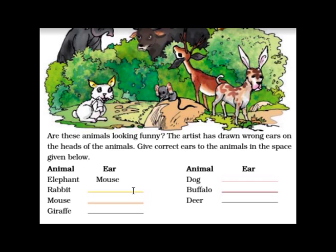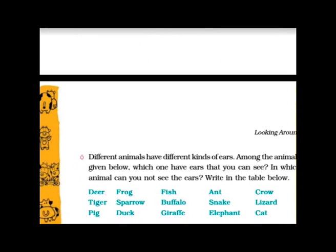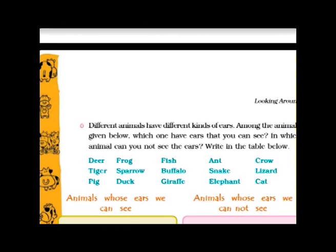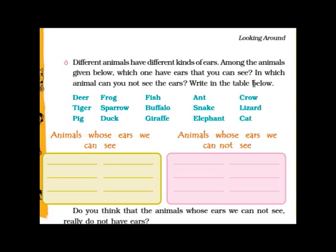Children, you have to fill up this. Let's go to the next page. Different animals have different kinds of ears. Among the animals given below, which ones have ears that you can see, and in which animals you cannot see the ears? Write the answer in the table below.